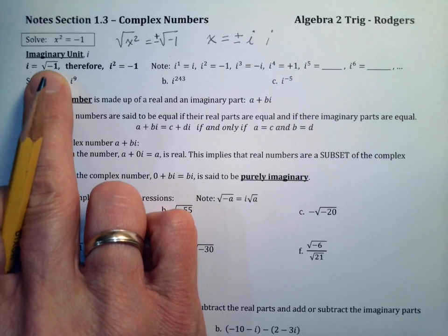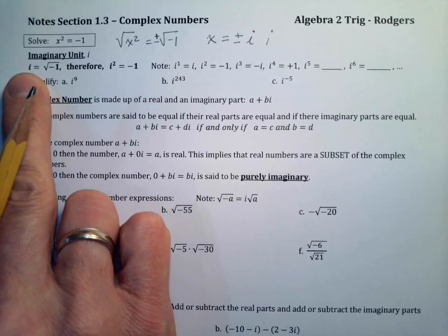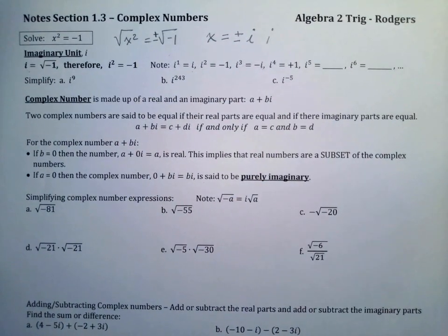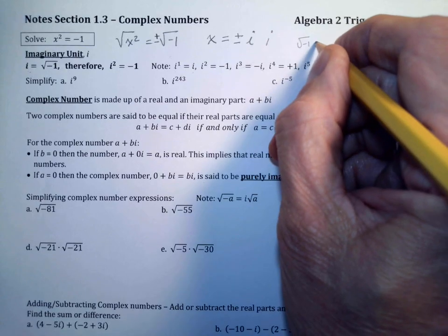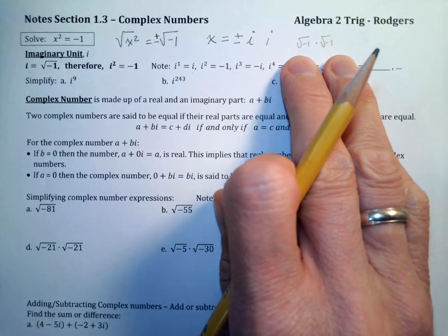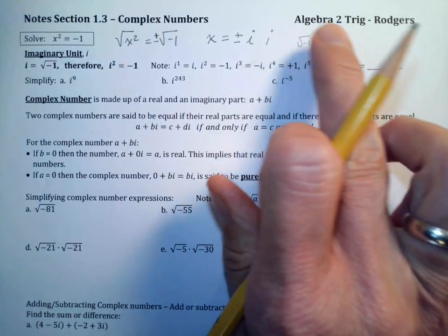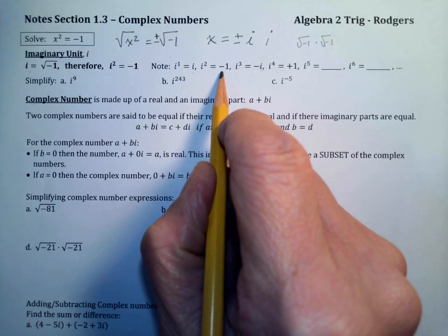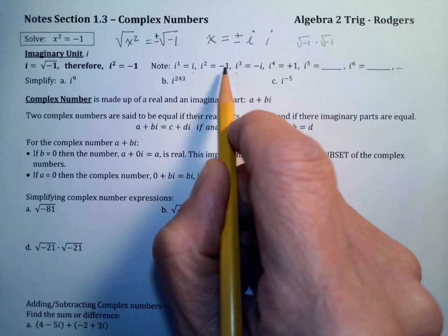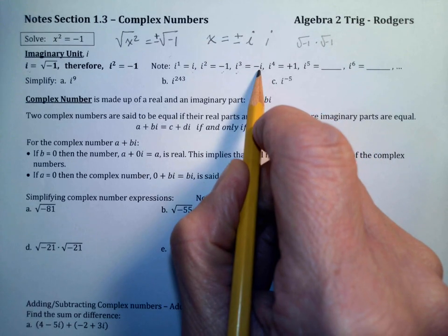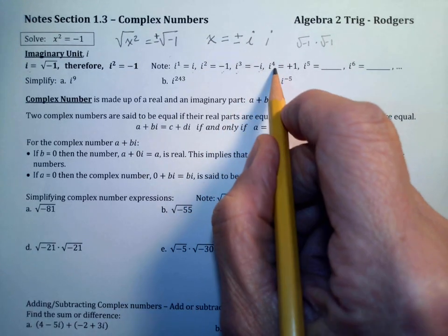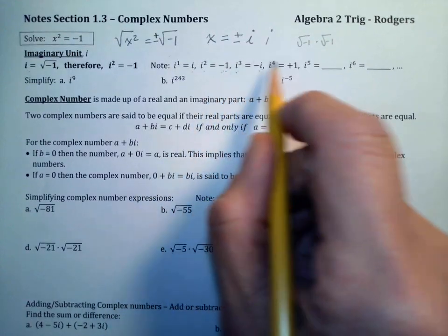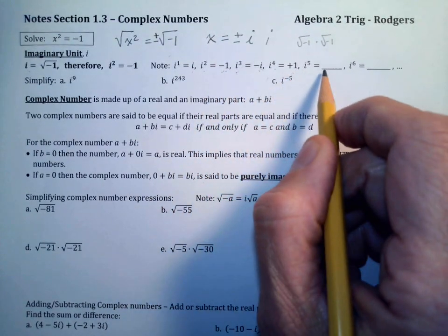Typically we take the negative out from under the radical and turn it into an i. So i¹ = i. For i², taking √(-1) × √(-1) makes sense that it equals -1, so i² = -1. Then i³ = i² × i = -1 × i = -i. And i⁴ = (i²)² = (-1)² = +1.